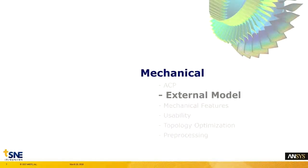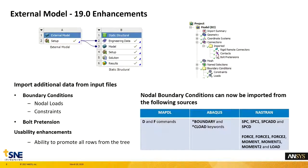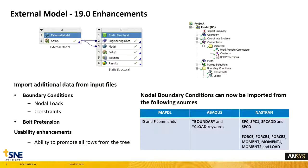다음은 Mechanical 두 번째 파트인 External Model에 대한 부분인데요. 19 버전에서 어떤 부분이 강화되었는지 살펴보겠습니다. 예전에도 External Model을 사용해서 외부 데이터를 가져오실 수 있었는데, 여기에 더불어서 INF 파일에 추가적으로 데이터를 가져올 수 있게 되었습니다. Boundary Condition에서 Nodal Load나 Constraint, 그리고 Bolt Pretension 또한 가져오실 수 있게 되었습니다.